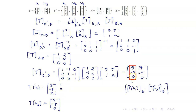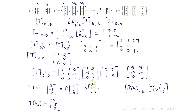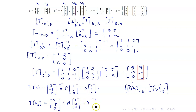Let us check: is this equal to 8 times W1 (which is (1,0,0)) minus 3 times W2 (which is (1,1,0))? That gives 8 minus 3 = 5, 0 minus 3 = negative 3. Correct. What about T of U2? That is 14 times (1,0,0) minus 5 times (1,1,0): 14 minus 5 = 9, 0 minus 5 = negative 5. Correct. Therefore, this is really the matrix representation of T from B to B prime.